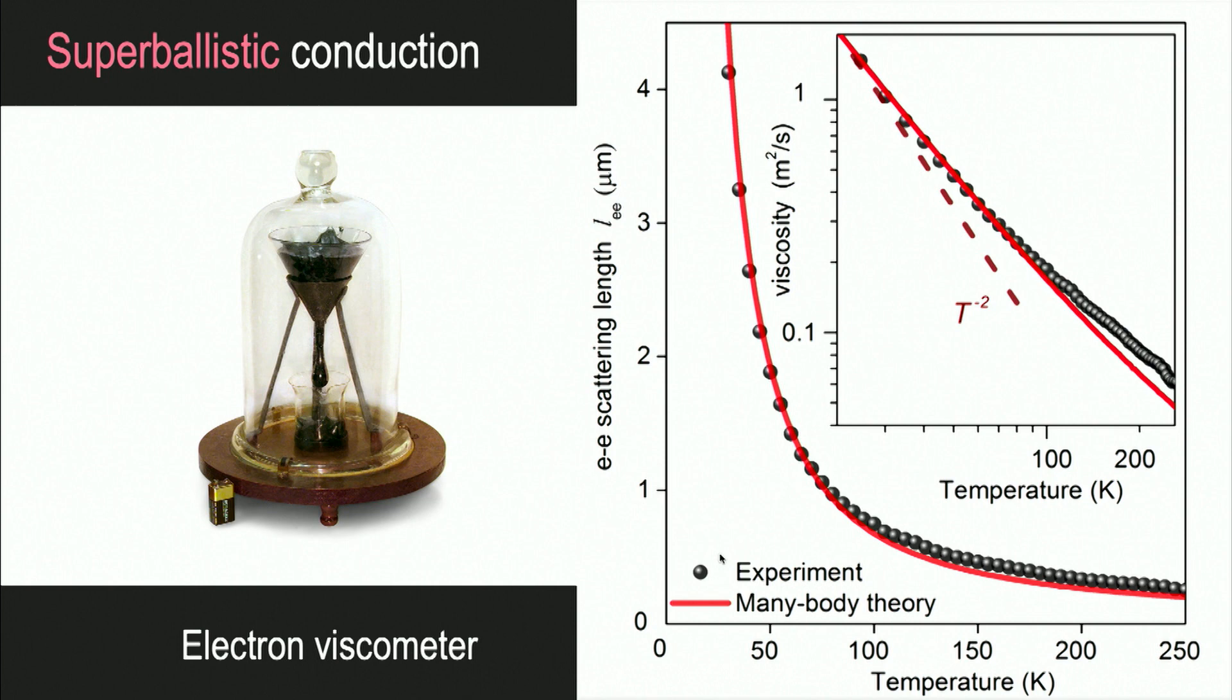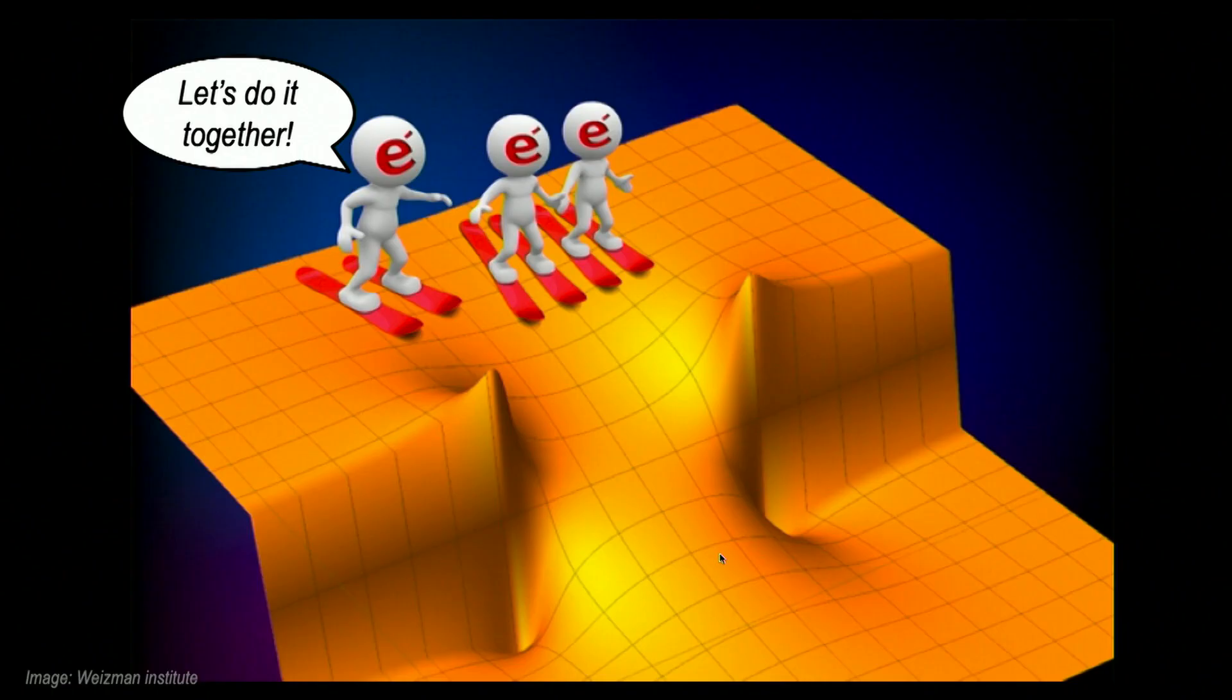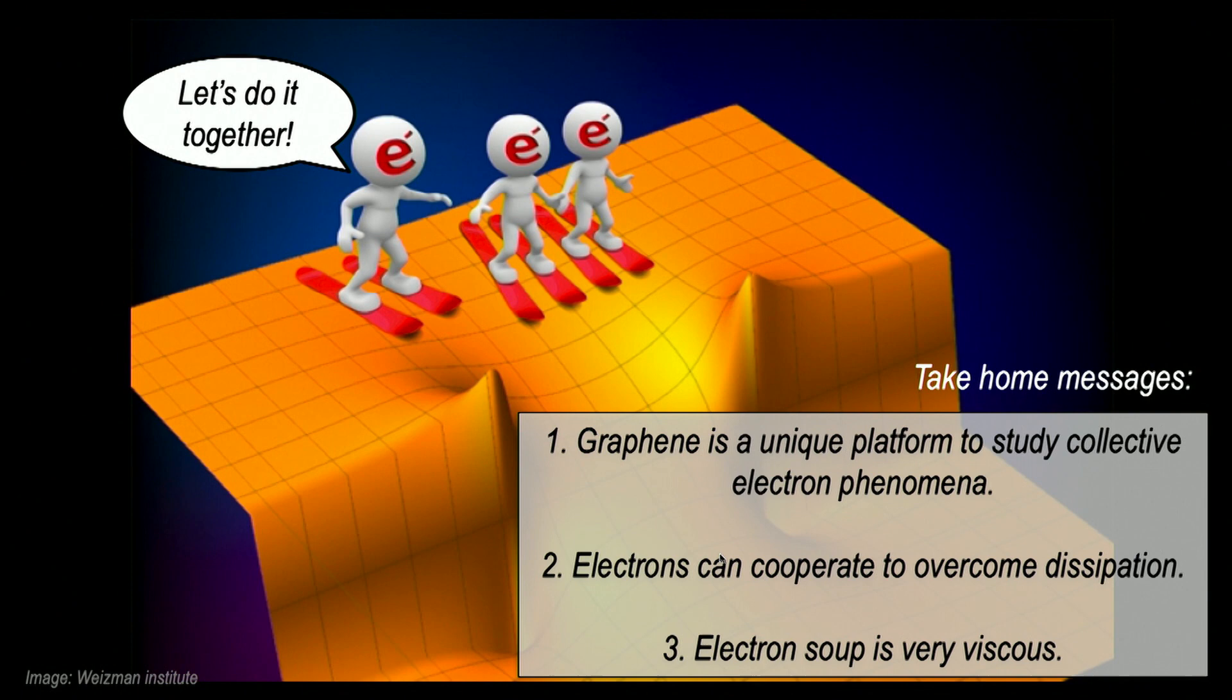If you want to make a comparison between viscosity of electron fluid and conventional liquids, it turns out that electrons are much more viscous than anything which you can think of. Water, honey, oil. Maybe it's not as viscous as this guy in the pitch experiment, but it's going there. With this I would like you to take away a few messages which can be summarized by this nice illustration. Graphene is a unique platform to study collective electron phenomena. Electrons can cooperate to overcome dissipation in such a point contact. And electron soup is very viscous.